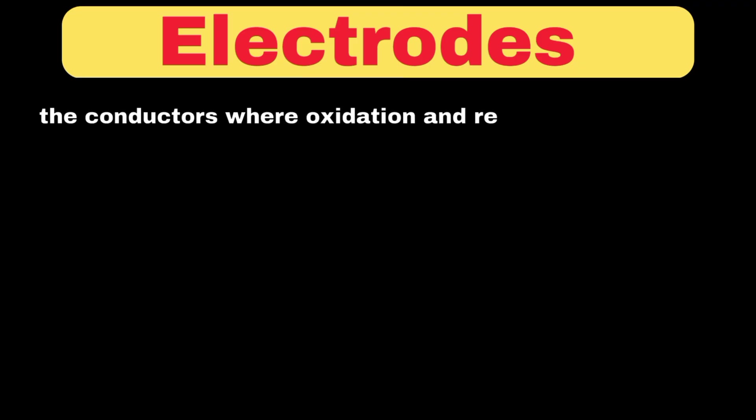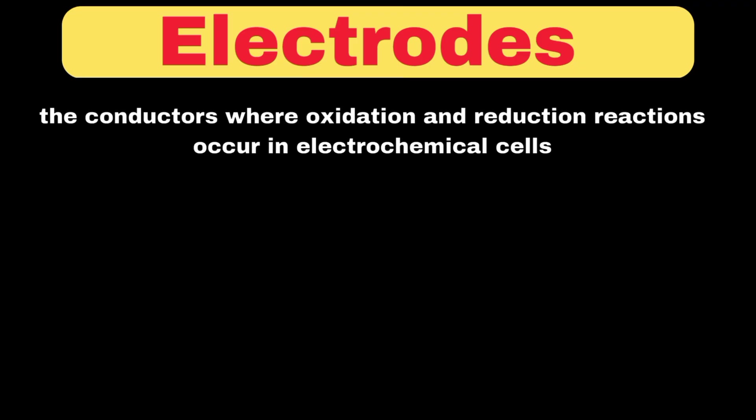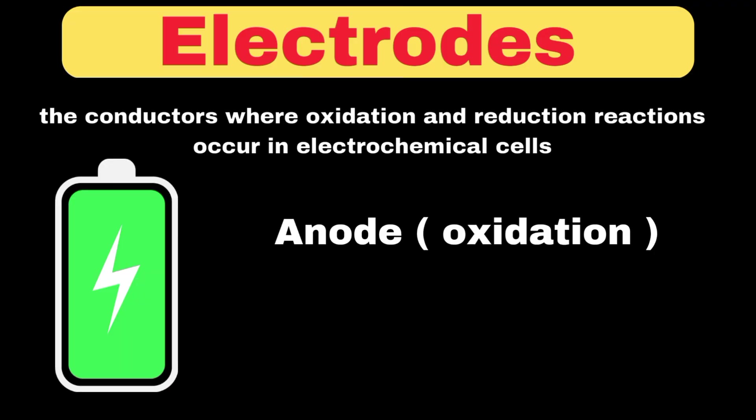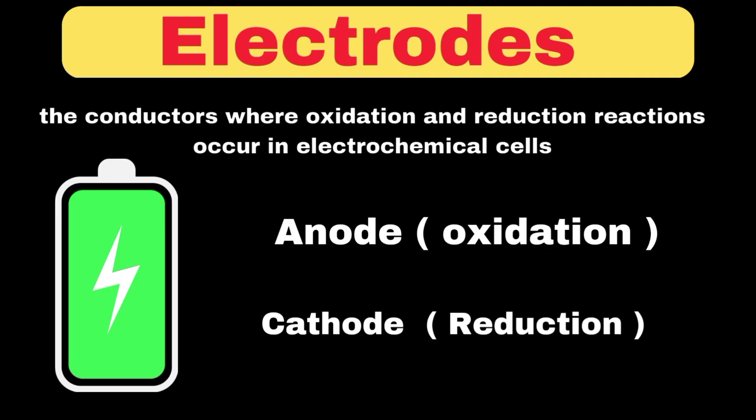Moving to electrodes, let's understand their role deeply. Electrodes can be defined as the conductors where oxidation and reduction reactions occur in electrochemical cells. Let's look at what happens in a rechargeable phone battery. The battery has two electrodes: an anode, where oxidation occurs, and a cathode, where reduction occurs. These electrodes are like the entrance and exit points for electrons in our electrochemical system.